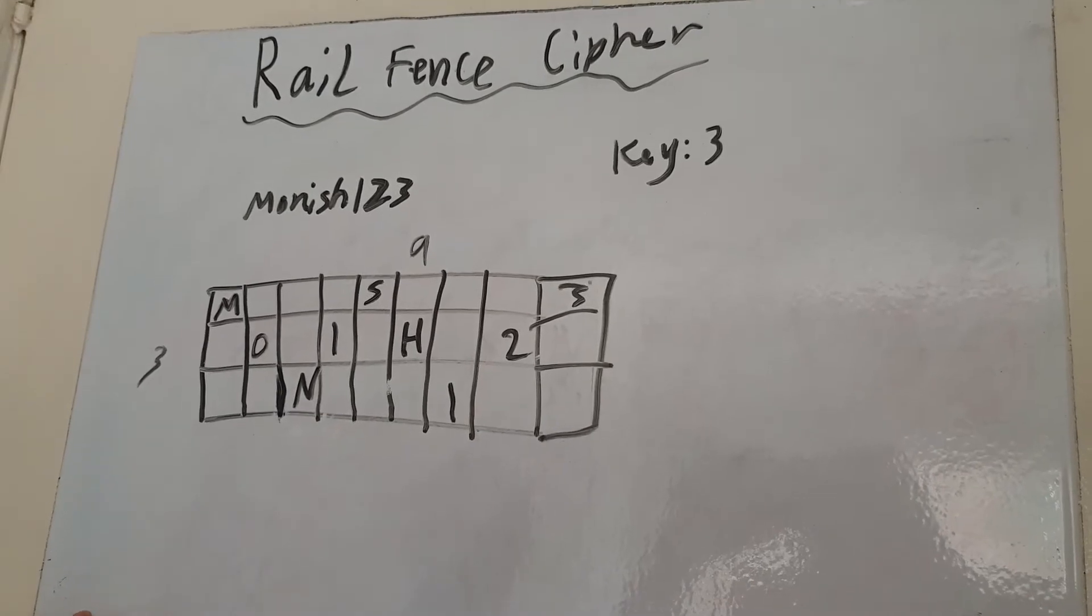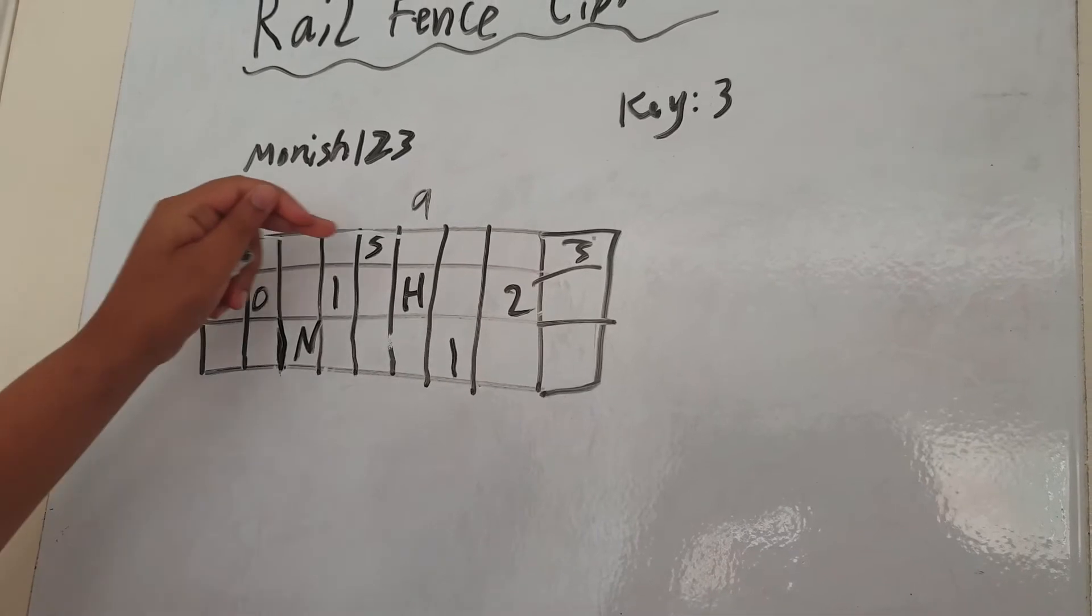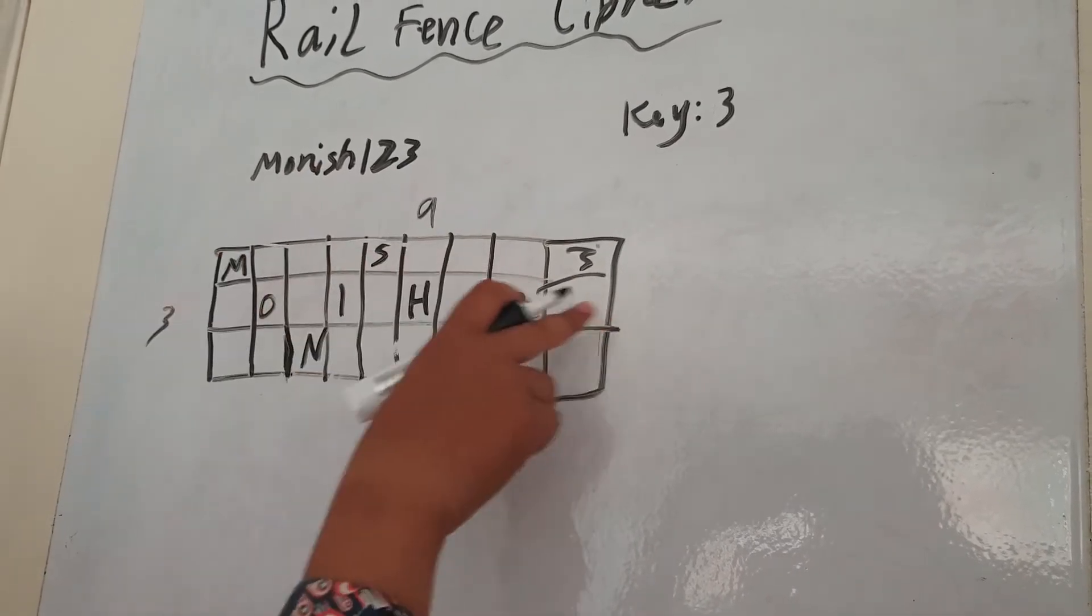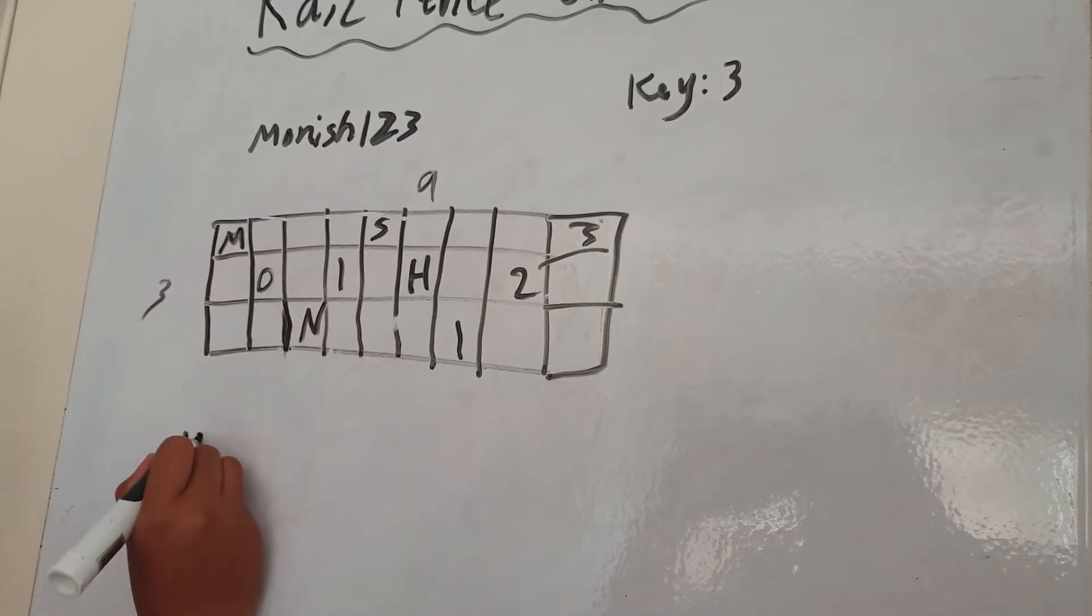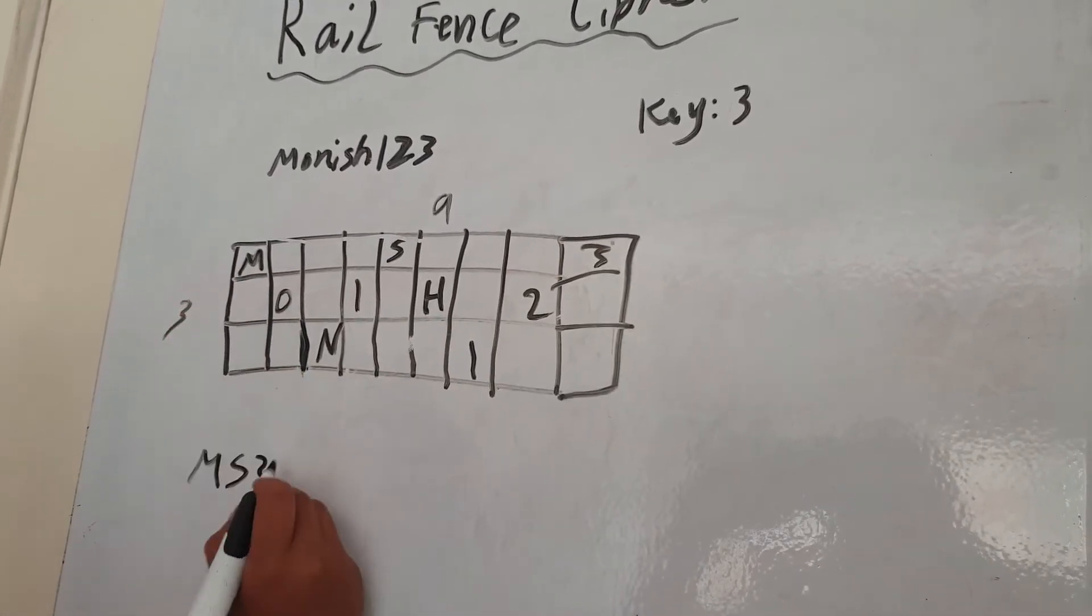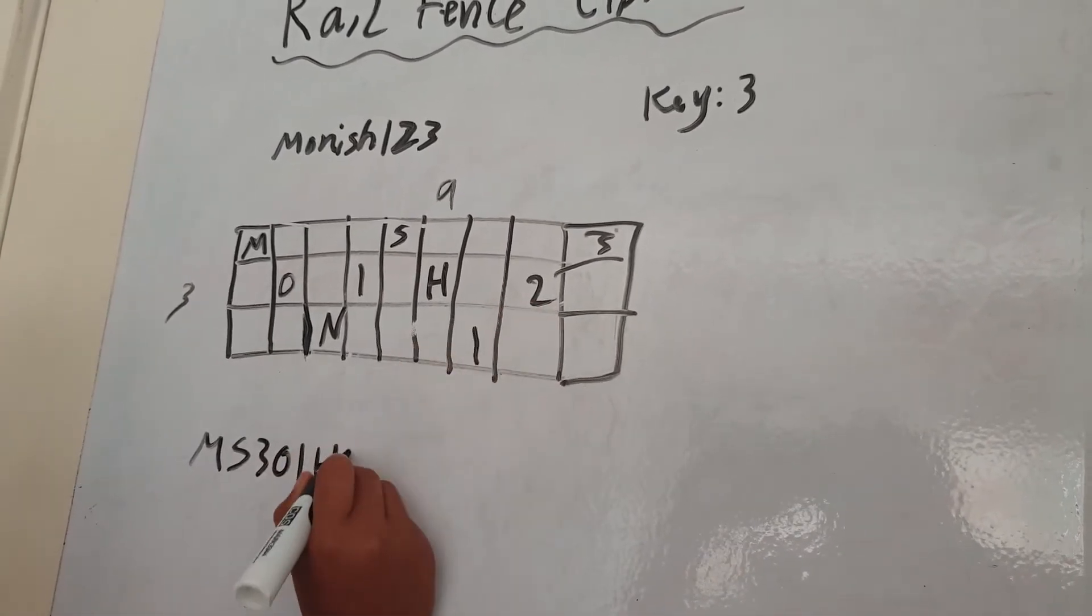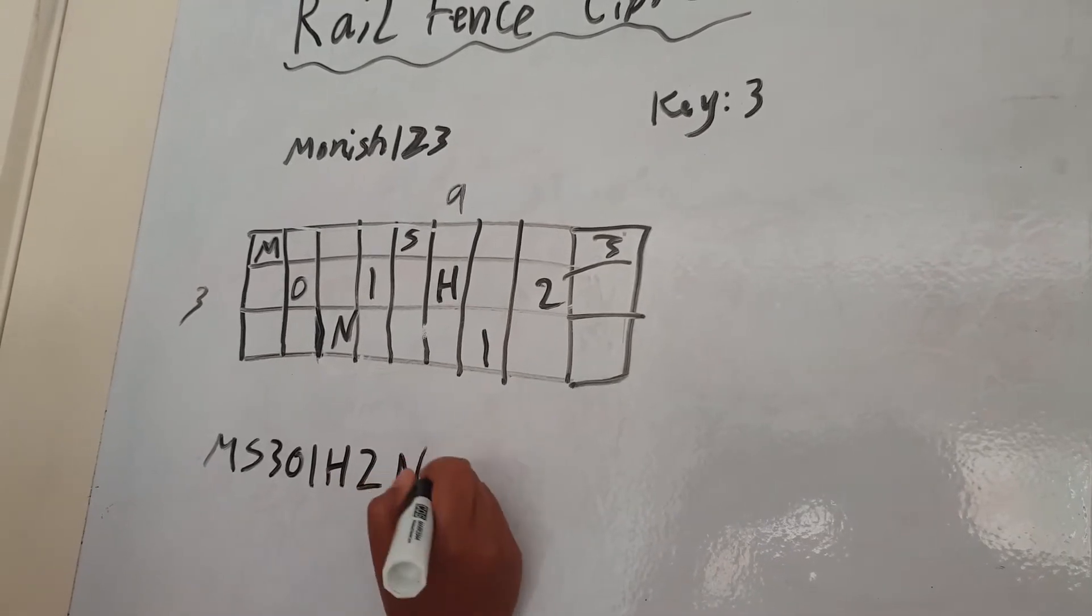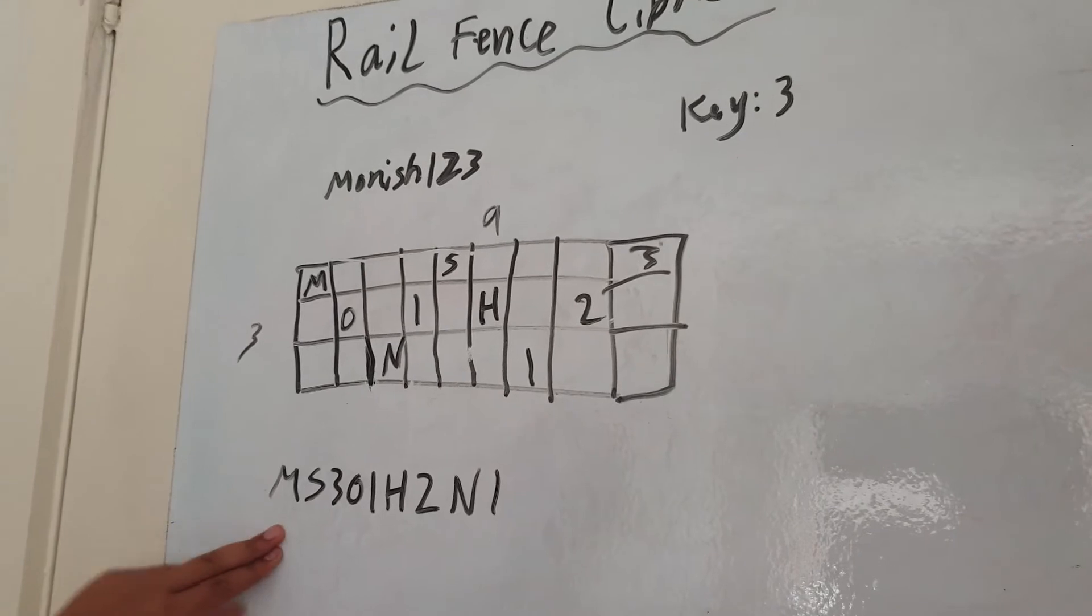All you need to do is you need to go along this line, and you need to write what you see. So you need to go M, then S, then three, then the next line. O, then I, and then H, and then two. Next is N and one. And that is your encrypted message.